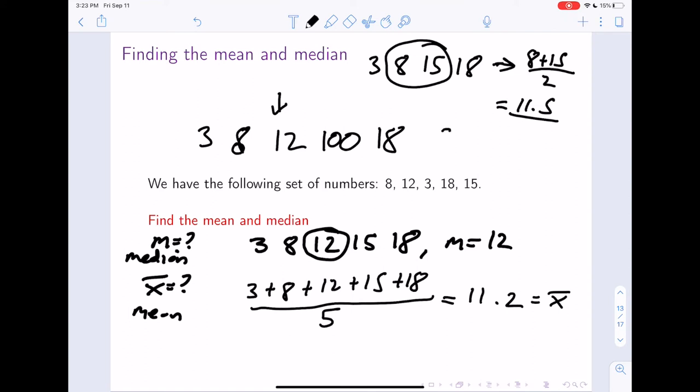Well, let's calculate it. 8 plus 3 plus 8 plus 12 plus 100 plus 18 over 5. Well, that is now going to equal 28.2. So in that situation, the mean is now 28.2, but the median stayed at 12. This is a really important thing to keep in mind. The mean is really impacted by outliers, by extreme values. The median is not.